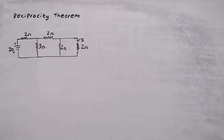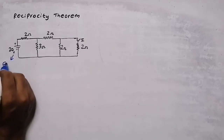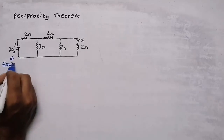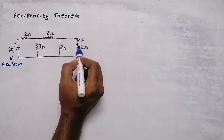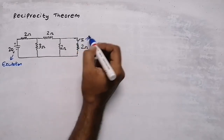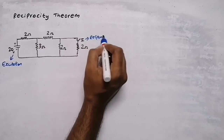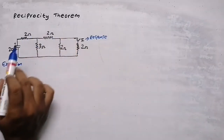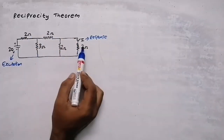In this video we are going to discuss the reciprocity theorem. A 20V voltage source is my excitation, and I need to find the current flowing through this 2Ω resistor — that value of current is my response. For the reciprocity theorem, I am going to interchange the excitation and response.